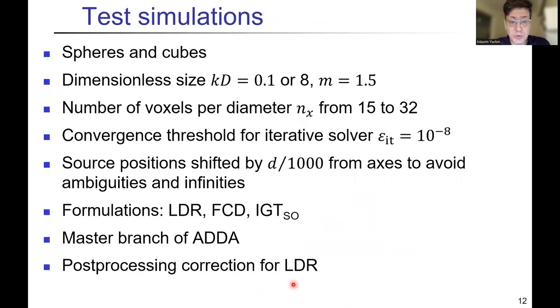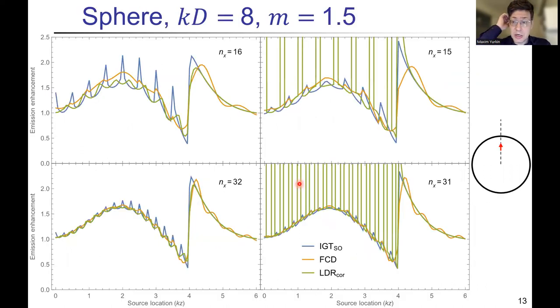I performed some test simulations. Let's go to the results. That's the same sphere as I showed before, but a bit more simulation. The IGT is the same as was used before. But FCD is now corrected by this self-term correction. LDR is post-corrected by division by the factor. You see that here the results are already more satisfactory. There is some trend and all formulations. There are some oscillations when we go from dipole to dipole. When we decrease the dipole size twice, the number of dipoles per diameter increases twice, then these oscillations decrease.